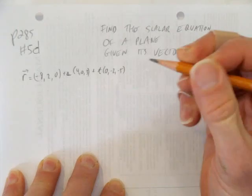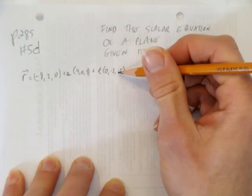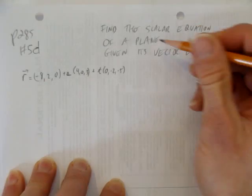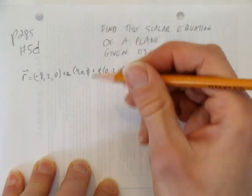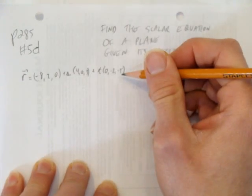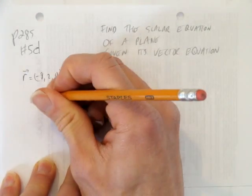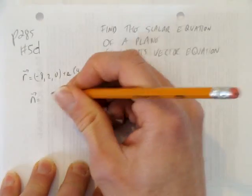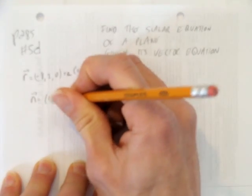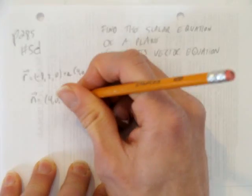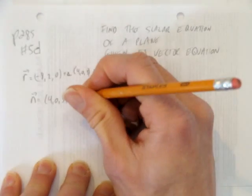Well, the first thing is we know right here we have two direction vectors. To write it in the scalar form, we need the normal to these two direction vectors. How do we find the normal vector? We take the cross product of the two direction vectors. That is, we need this normal vector to write the equation we want.